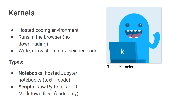You might also have heard people talking about kernels. Kernels mean a lot of different things, especially in the data science context, but on Kaggle specifically, that refers to our hosted coding environment. Hosted means that it runs in your browser — Chrome, Edge, Safari, or whatever web browser you're using — without downloading anything. And it lets you write, run, and also share data science code. You can also use code that other people have shared.